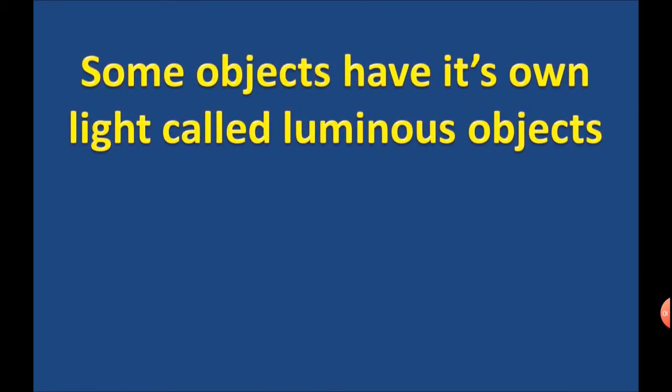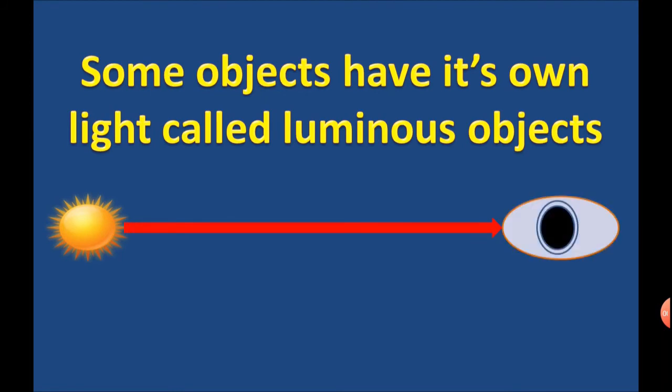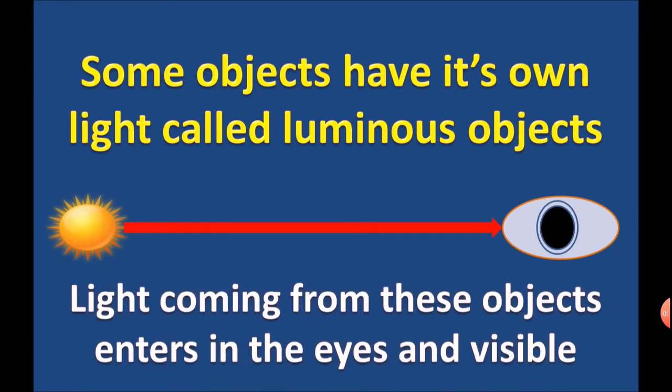Some objects have their own light, called luminous objects. Luminous objects emit light and it directly enters in eyes. Light coming from these objects enters in the eyes and makes them visible.